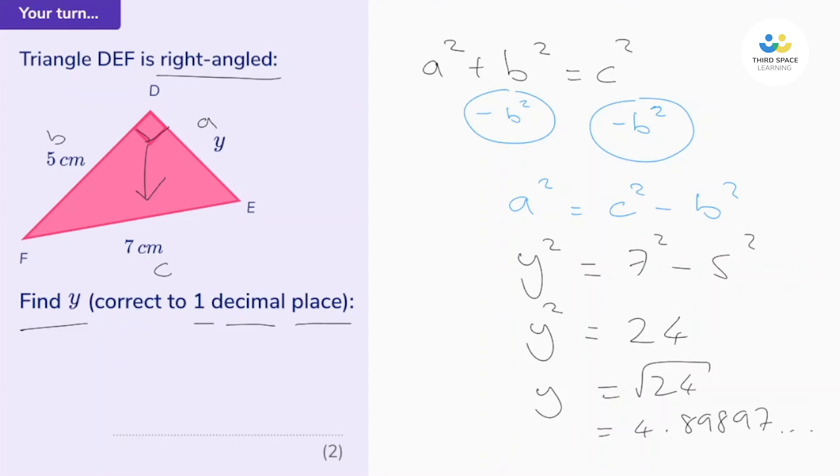Now it says to one decimal place, so let's round it. The eight is in the first decimal place, so let's draw a line to the right. Now we've got a nine there, so nine is bigger than five, so we're going to round up. So my answer is 4.9, 4.9 centimeters - those all important units.